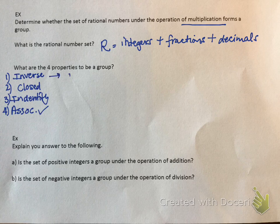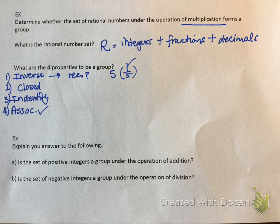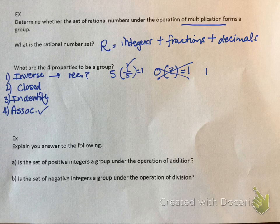Does the number have a reciprocal? Let's check: does 5 have a reciprocal? That's one-fifth. Is one-fifth in the rational number set? Yes. But we get into trouble when we try to do this with zero. Zero times what equals 1? Zero times anything is zero, so nothing works for it. So it flunks on inverse — the answer is no, because zero screws things up. That is a counterexample.